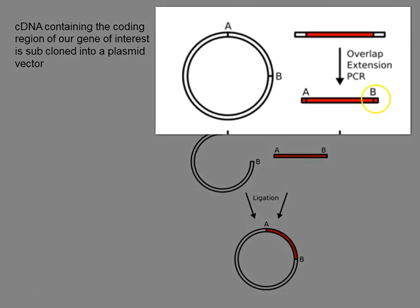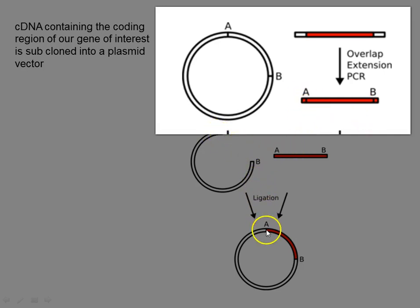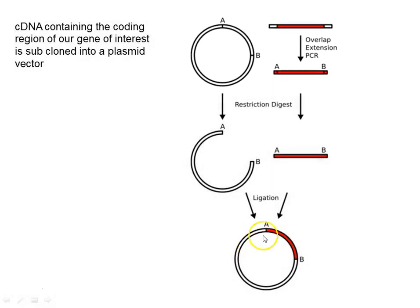So in subcloning, we cut open our vector using restriction enzymes — in this case restriction enzymes A and B. We cut our cDNA with the same restriction enzymes, or compatible ones, in this case A and B. Then we use DNA ligase to ligate the two together, giving us our vector with our gene of interest inserted into it, shown in red.